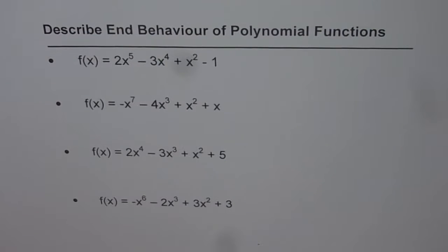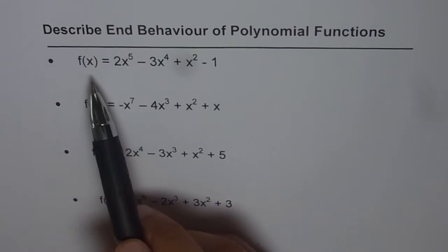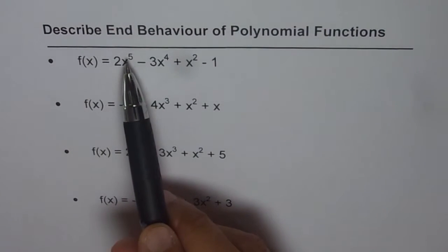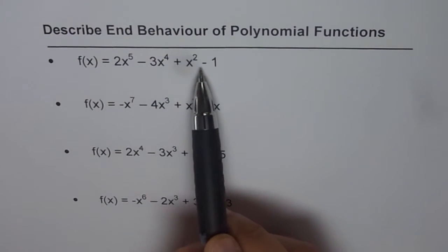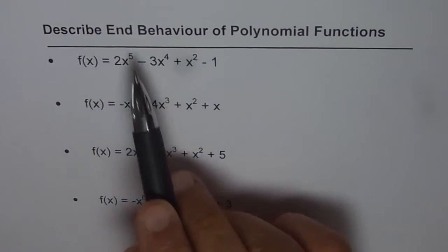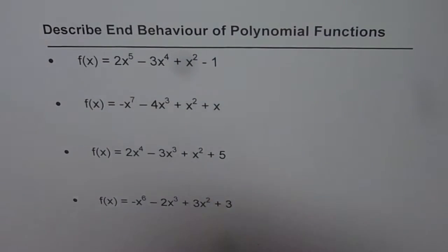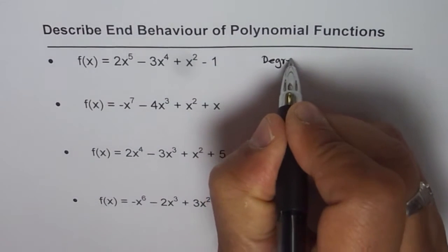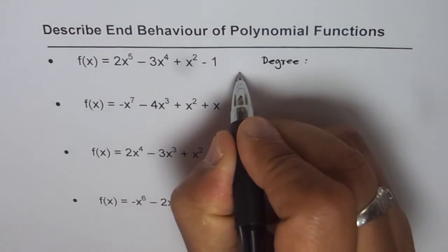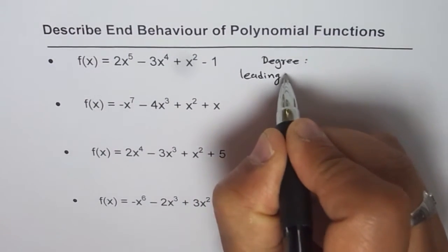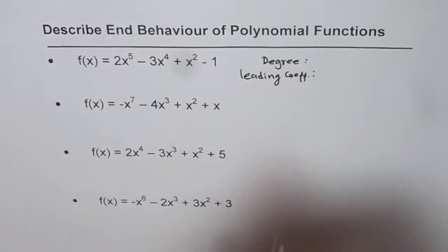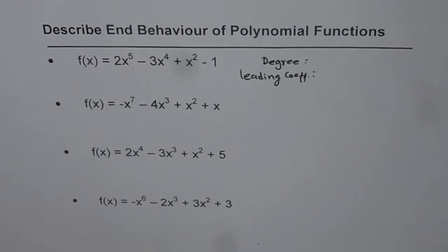Let us now understand how to describe end behavior of a polynomial function. Here we have four examples and we will try to understand end behavior of polynomial functions when written in standard form. End behavior depends on basically two things: the first is degree and the second is leading coefficient. These are the two things which decide end behavior of a polynomial function.